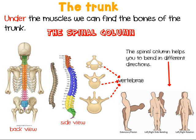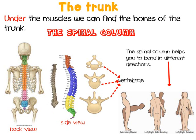In this picture you can see that the spinal column helps you to bend in different directions: forward, backward, to the left, to the right, and rotate your torso. Without moving the legs you can look to the right and to the left. You have to take good care of your spinal column — sitting down properly on the chair.